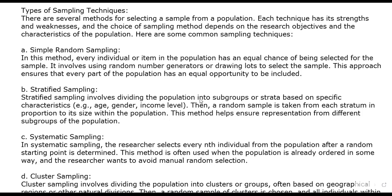Stratified sampling ensures that the population is represented from different subgroups. For instance, you get top management, middle management, and lower management and put them in one basket to get their respective views. This is a unique sampling method that ensures absolute representation.